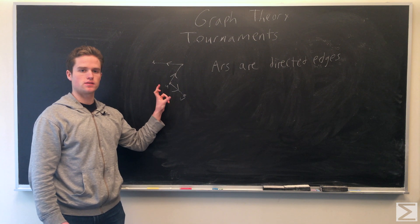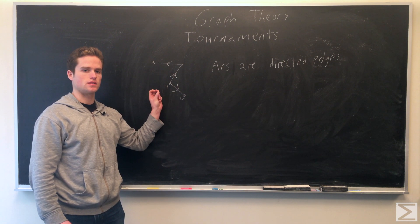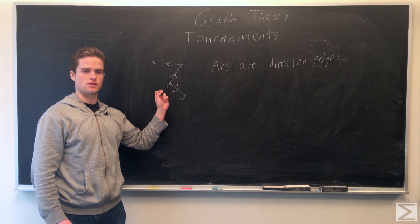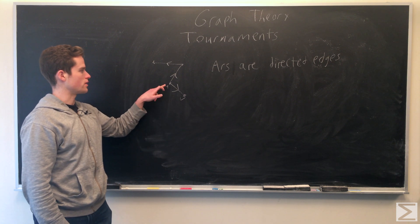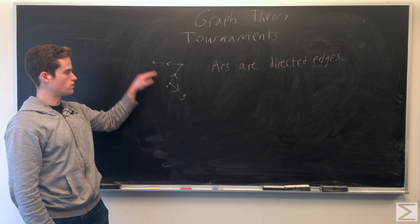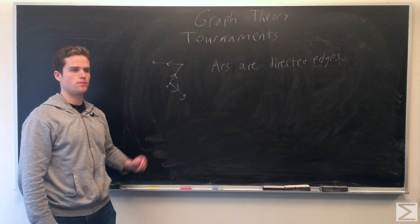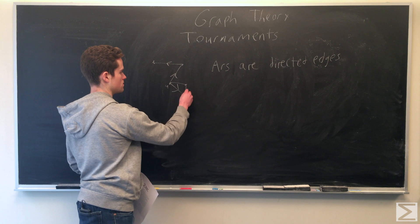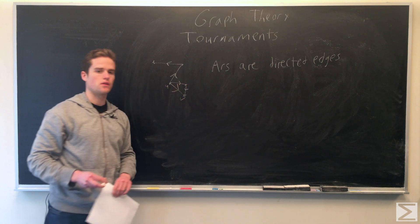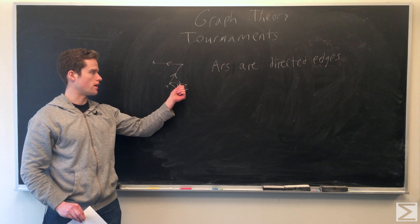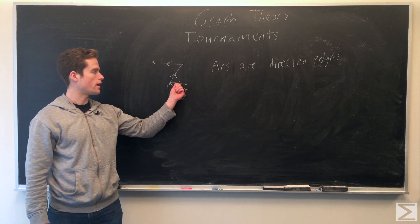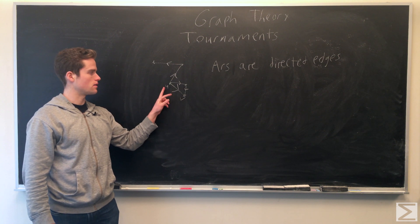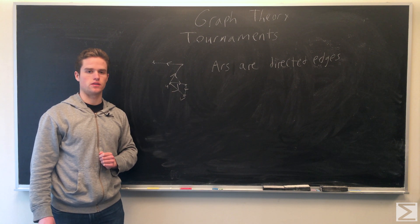We're also going to define the distance between two vertices as the smallest path between the two vertices that has the least number of edges in it. So the distance between this and this will be 2, and the distance between u and v will be 1. If we have some extra directed edges between u and v, the distance will still be 1 because the minimum length path is length 1. That's how we're going to define our distance.